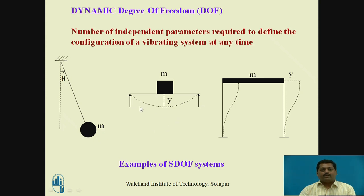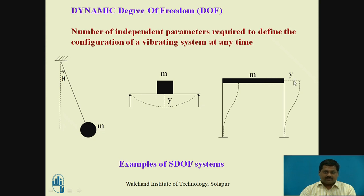In the second example, a simply supported beam with mass kept at mid span, y (the deflection) is the independent parameter and is the degree of freedom. For a portal frame, mass m representing the storey mass has y as the horizontal displacement, which is the degree of freedom. These are examples of degrees of freedom for various systems, each designated as a single degree of freedom system.